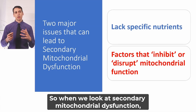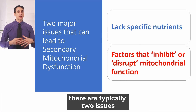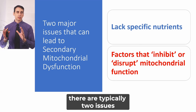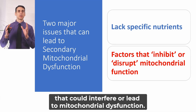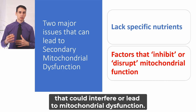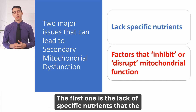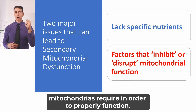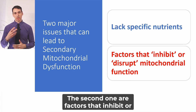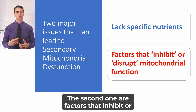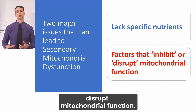When we look at secondary mitochondrial dysfunction, there are typically two issues — oversimplifying this major topic — that could interfere with or lead to mitochondrial dysfunction. The first is the lack of specific nutrients that the mitochondria require in order to properly function. The second are factors that inhibit or disrupt mitochondrial function.